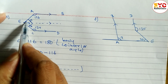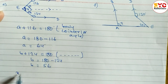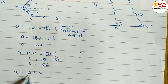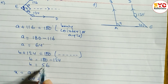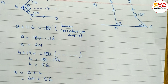Now we have to find out the value of x whole. x is equal to A plus B. A is equal to 64 and B is equal to 56. When you add, 64 plus 56, we get 120 degrees. So value of x is equal to 120 degrees.